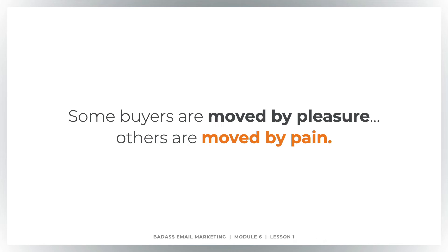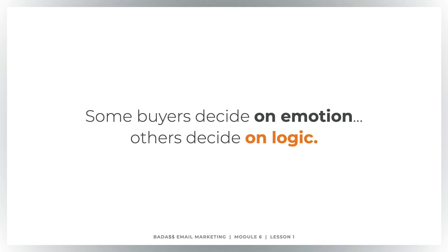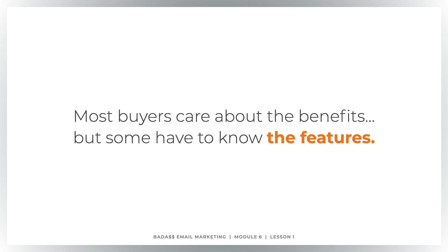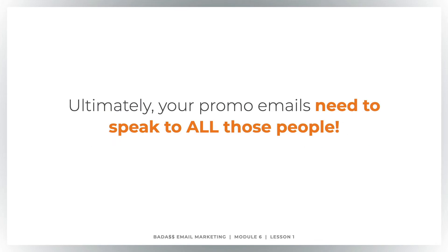Some buyers are moved by pleasure, others are moved by pain — so you need to hit both in your messaging. Some buyers decide based on emotion; others decide based on logic. You have to provide both an emotional basis and a logical basis for people to buy. Most buyers care about the benefits, but some have to know the features — like the number of modules. There are people who will care about that, even though every copywriter will tell you it's the transformation that really sells. That's true, but some people still need to hear the feature, so you need to speak to both. Ultimately, your promo emails need to speak to all of those different people.